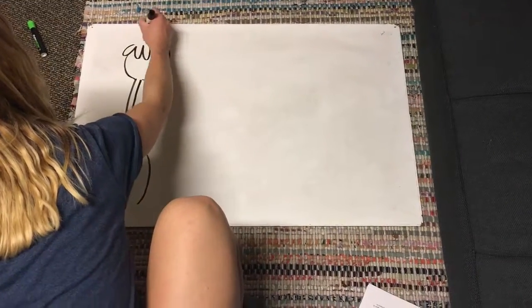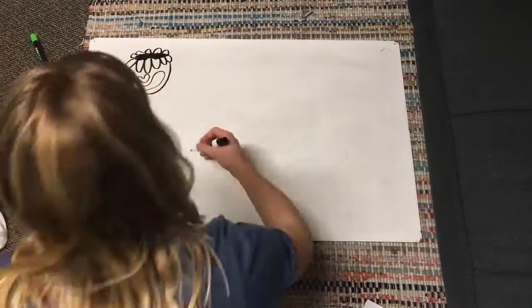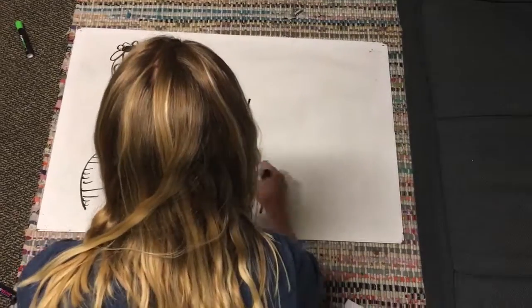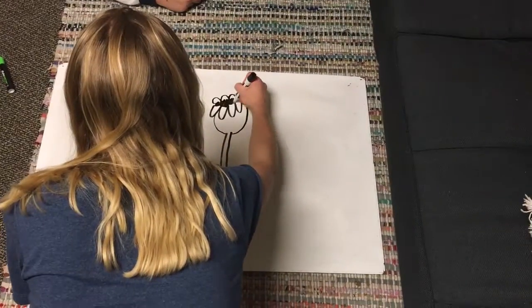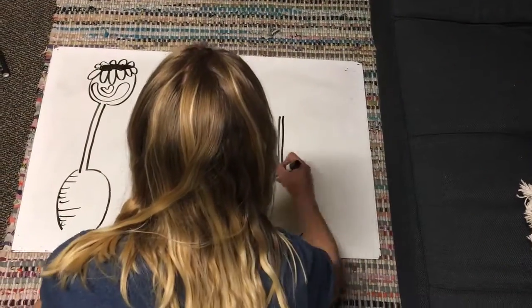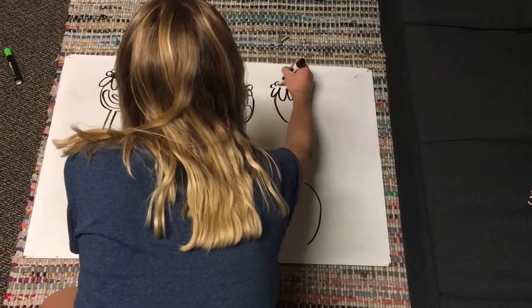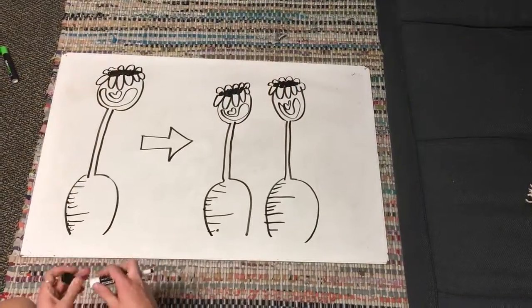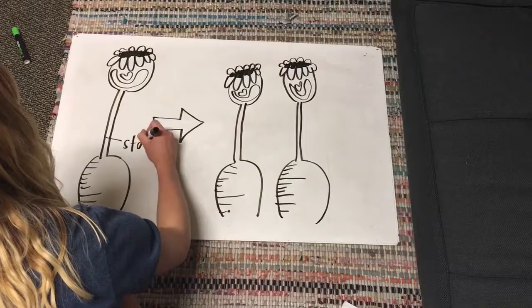The phylum Entoprocta exhibits a variety of reproductive modes and behaviors. From both the colonial and solitary species, each organism is capable of asexual colonial reproduction or budding. In colonial species, new zooids are formed from the stalk or stolons.